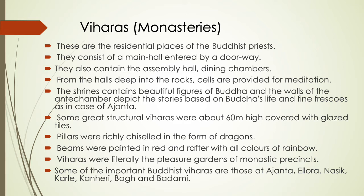Twenty-five of the rock-cut caves of Ajanta are viharas and are the finest of monasteries. Four of the viharas belonged to the 2nd century BC. Later, other caves were excavated during the reign of the Vakataka rulers, who were the contemporaries of the Gupta rulers. Some of the most beautiful viharas belonged to this period. The viharas of Elora, dated 400 AD to 7th century AD, are of 1, 2, and 3 storeys and are the largest of the type. They contain sculptural figures and belong to both Hinayana and Mahayana Buddhism.